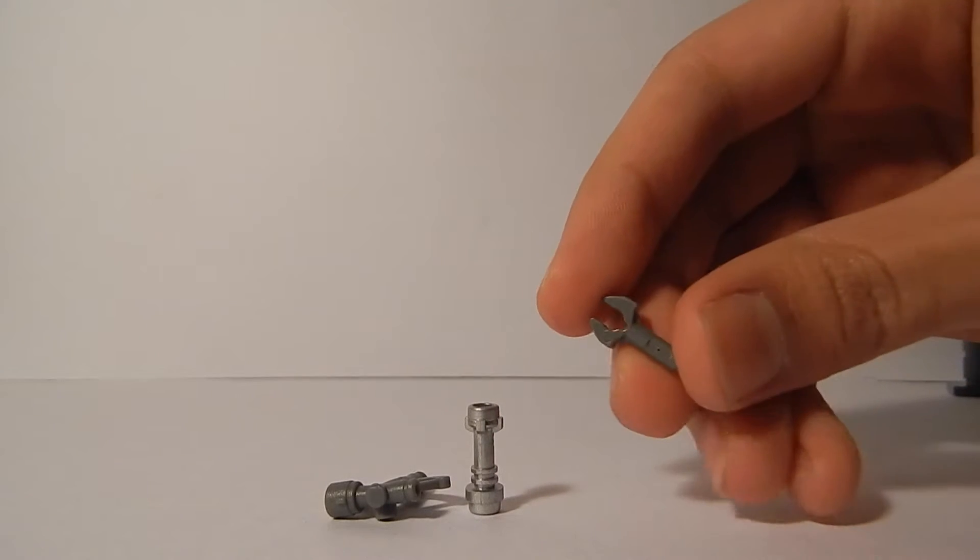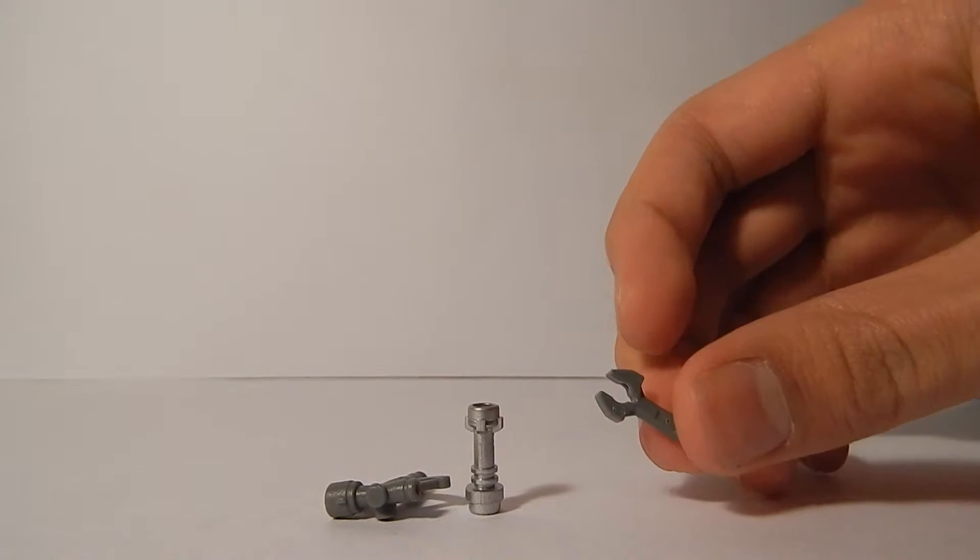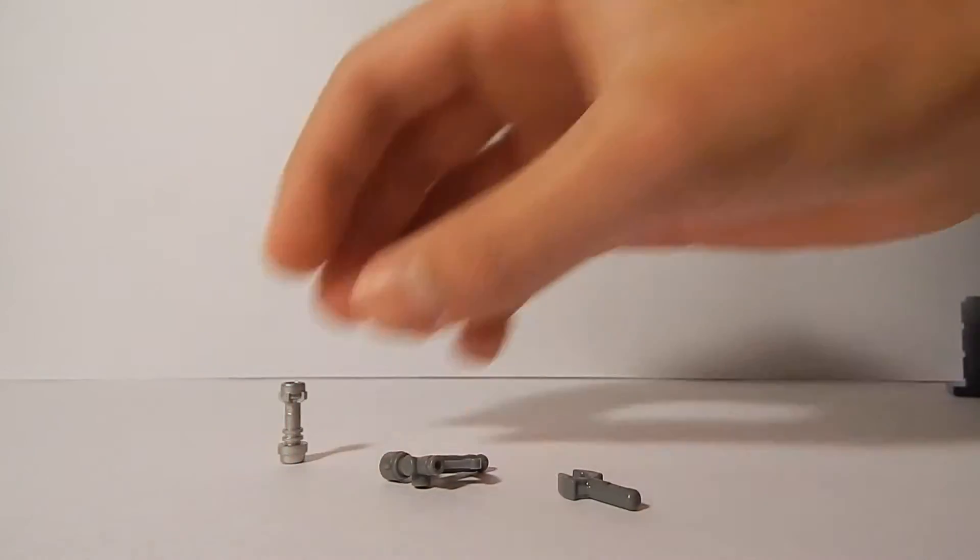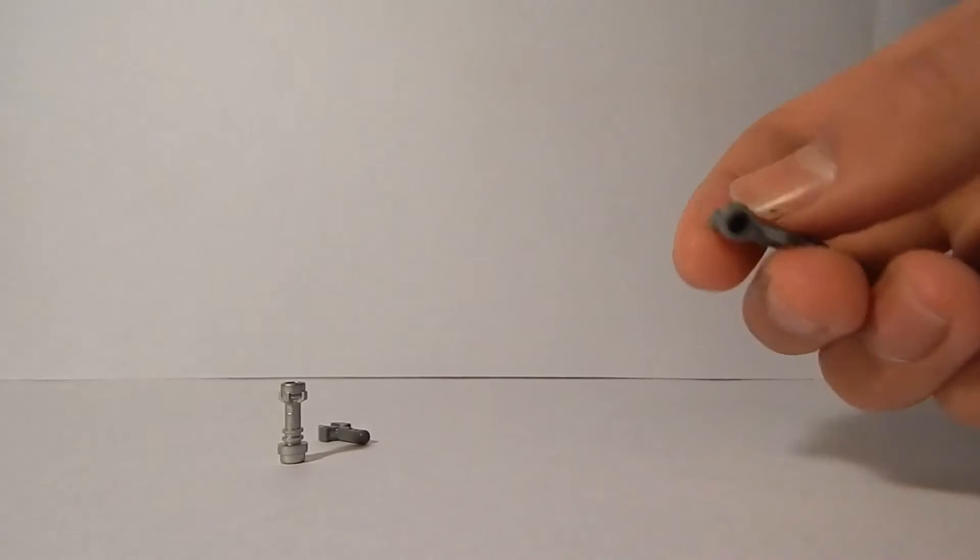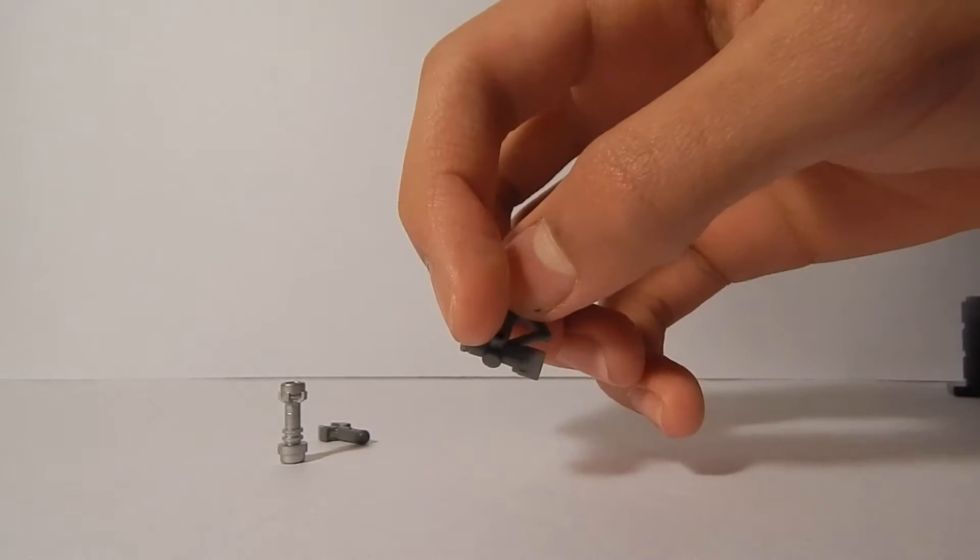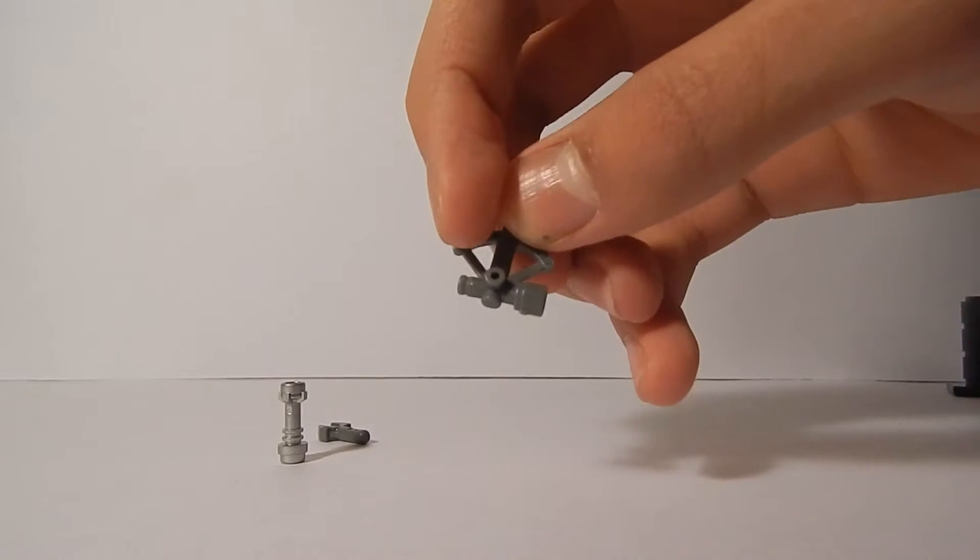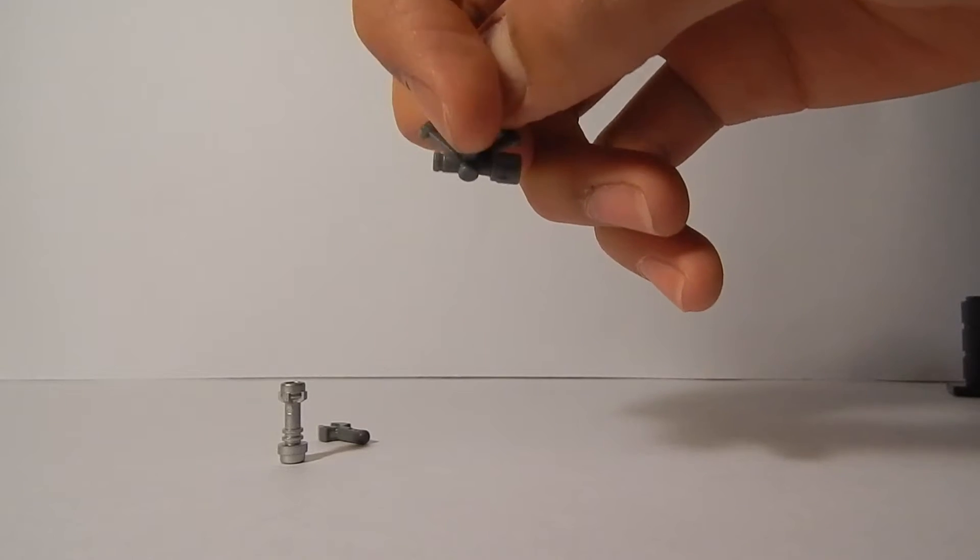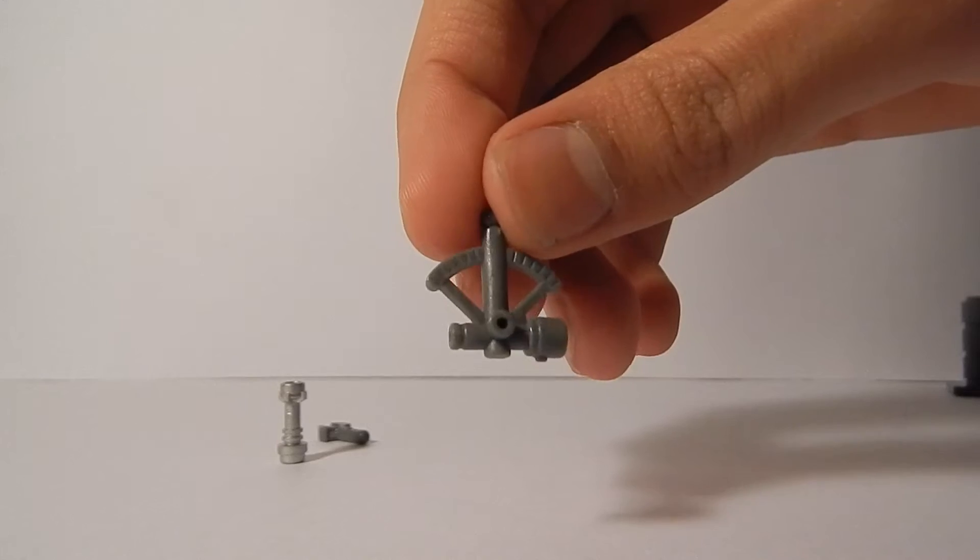This can be really tricky, so if you're having a hard time you can always pause the video or rewind. On the compass piece there is a little tube here, in between these two little tubes that hang out to the side. There is a little tube there.